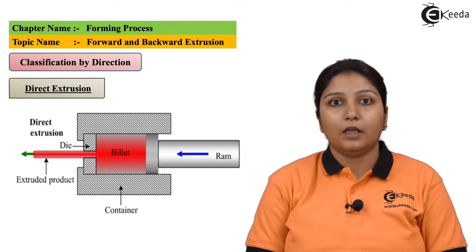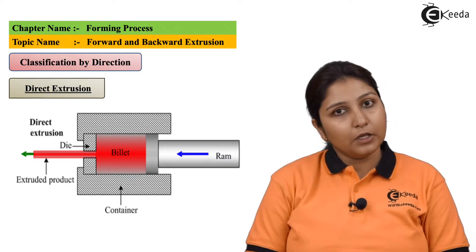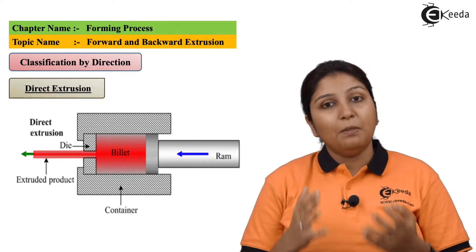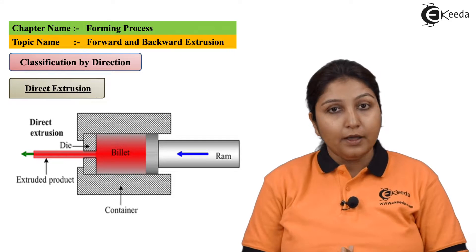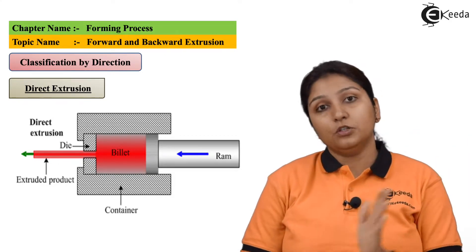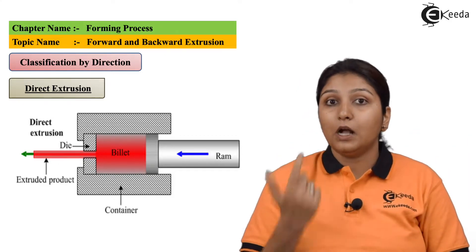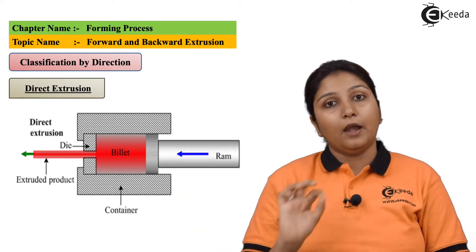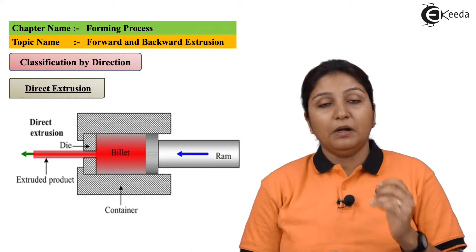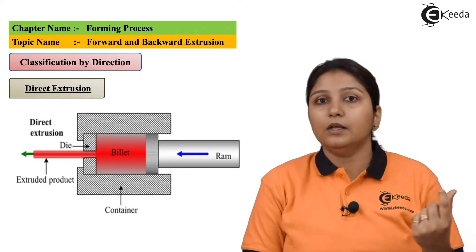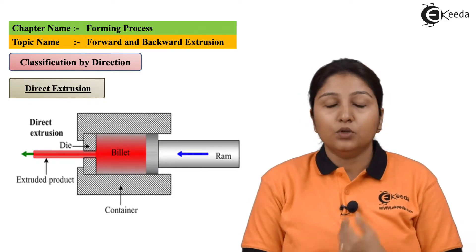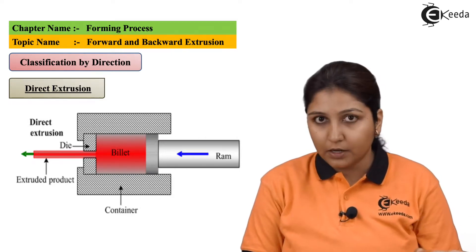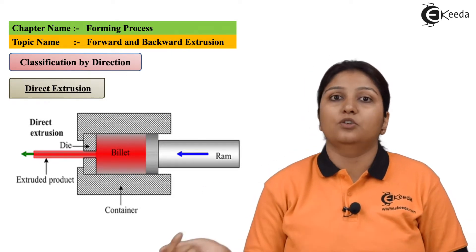The first process is direct extrusion. In the diagram you can see it is a basic extrusion process. You have a cylinder. Material is filled in the cylinder in the form of a billet. A ram is used to push the material. Material comes out of a small opening from the cylinder and your object is made. Material is heated so that it can easily come out from the opening. This is forward extrusion because the direction of the material is equal to the direction of the ram.